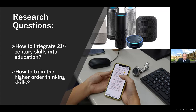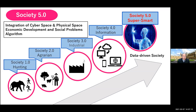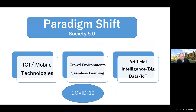I made two research questions. First: how to integrate 21st century skills into education. The second question is how to train higher-order thinking skills. We are moving towards Society 5.0 — right now we are between Society 4.0 and Society 5.0. Society 5.0 is an integration of cyberspace and physical space, where economic development and social problems are solved by computer algorithms. It's a data-driven society. That's why we are facing a paradigm shift because of the advancement of ICT, mobile technologies, and the cloud environment.